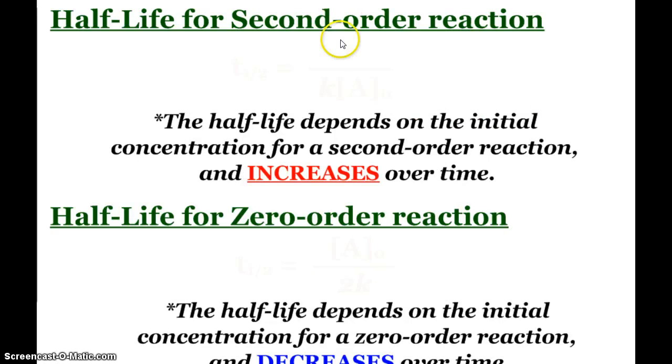For a second-order reaction, our half-life equation looks like that: 1 over the rate constant times the initial concentration. So you'll notice, for a second-order reaction, the half-life does depend on the initial concentration and it increases over time. So if I have a second-order reaction and it takes 10 minutes for the first half-life to go by, it could take 20 minutes or 30 minutes or longer for the next half-life, and so on.